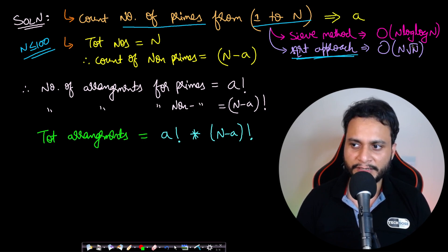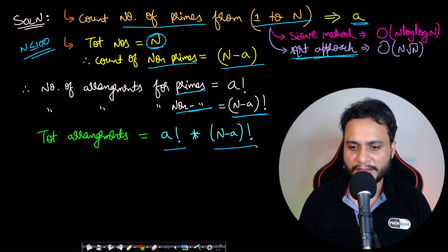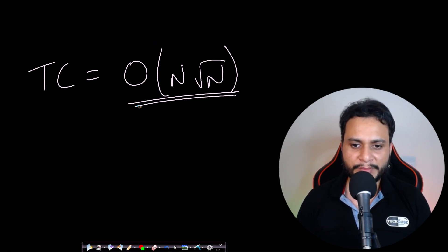The total number of items is n, and the number of primes is a, so the count of non-primes is n minus a. The number of arrangements for primes is a factorial, and for non-primes is (n minus a) factorial. Therefore, the total number of arrangements is a factorial times (n minus a) factorial. The time complexity is O(n root n), iterating for all numbers from 1 to n and determining if each is prime.